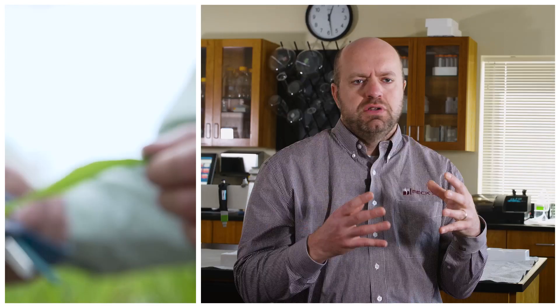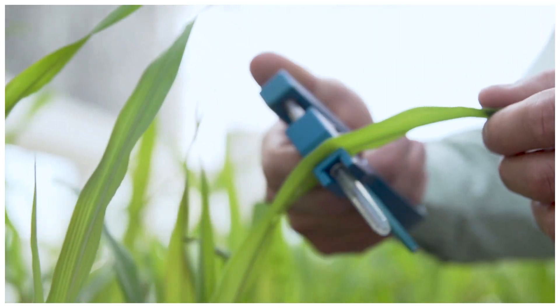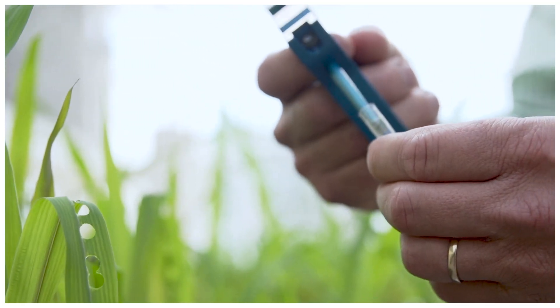We start by taking either a kernel or leaf sample and extract DNA, pulling the DNA out of the cells and suspending it in a solution.